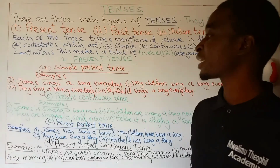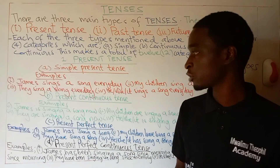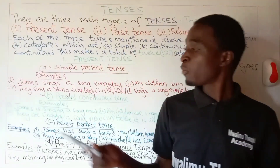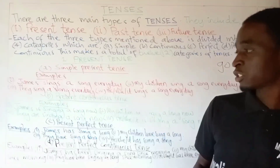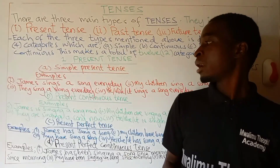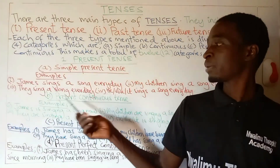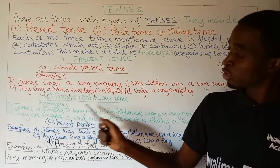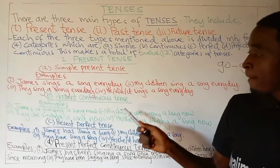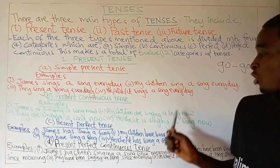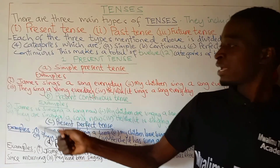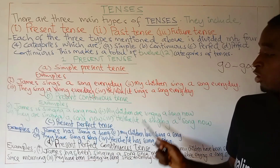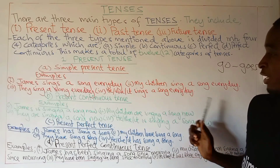After this first category, let us see the second category of present tense: present continuous tense. We have different examples of sentences in present continuous tense. The first example: James is singing a song now. Number two: my children are singing a song now. Number three: they are singing a song now. Number four: he or she or it is singing a song now.